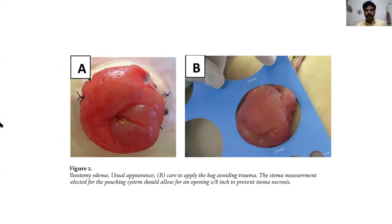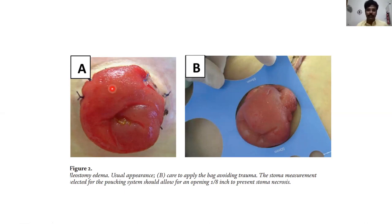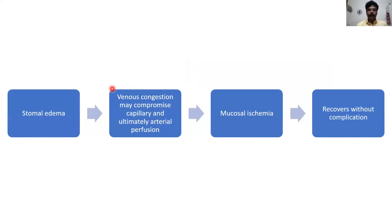This illustrates loss of mucosal fold — this ileostomy that has been matured shows no mucosal fold; there are just grooves. One cannot differentiate whether it is an ileostomy or a colostomy, that is the extent of edema. Stoma edema is likely to increase and impair capillary perfusion due to interstitial hypertension, leading to mucosal ischemia and then sloughing. Invariably, these mucosal sloughings heal with some scar formation or re-epithelialization and do not have any long-term complications.